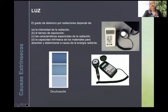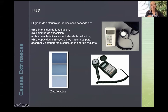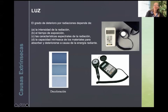El grado de deterioro que genera la radiación depende de: la intensidad de la radiación, el tiempo de exposición, las características especiales del tipo de radiación, y la capacidad intrínseca de los materiales para absorber y deteriorarse. Una recomendación principal para museos, archivos y bibliotecas que realizan exposiciones es que no sean por periodos prolongados y que la intensidad de radiación sea muy baja. Los materiales orgánicos como plumas, textiles, papel y piel son mucho más sensibles ante la incidencia de la luz que materiales pétreos o metálicos.